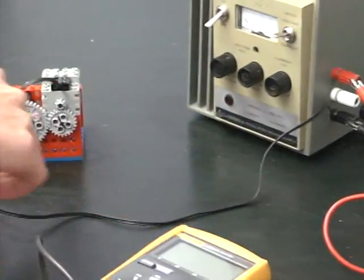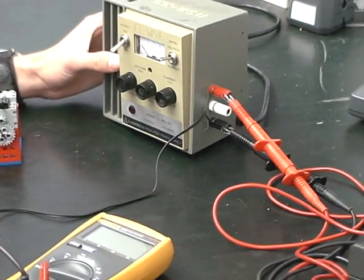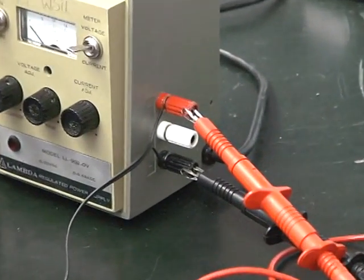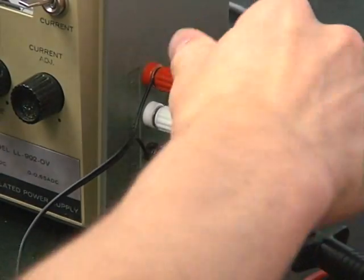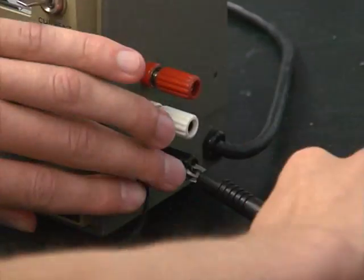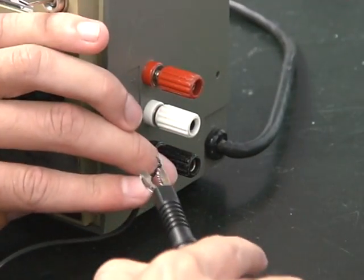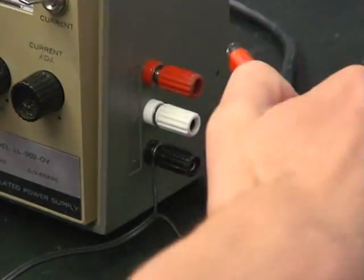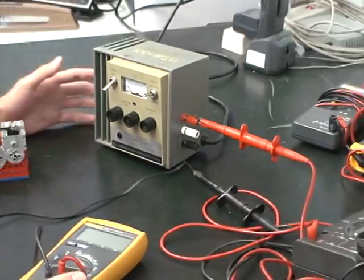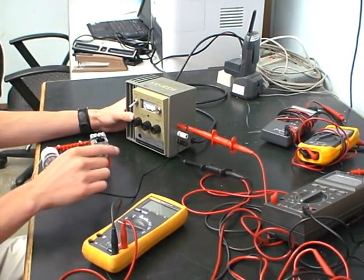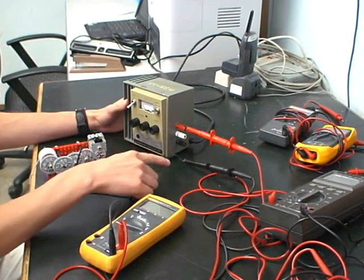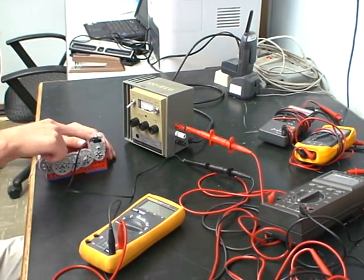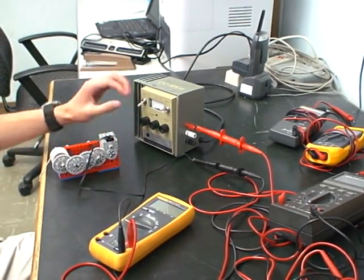And now to measure the current going through the circuit, you have to insert the multimeter into the existing current. So to do this, we're going to take this off here, attach the black cord to the wire here, and this red one will stay attached here. So now the circuit goes through the multimeter and the motor back to the DC power supply, but before it just went straight from the DC power supply to the motor and back. This is how we can measure current.